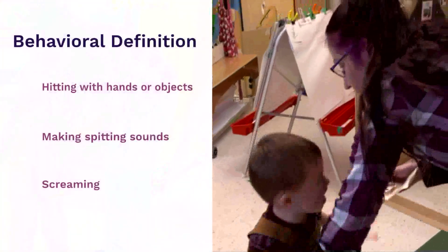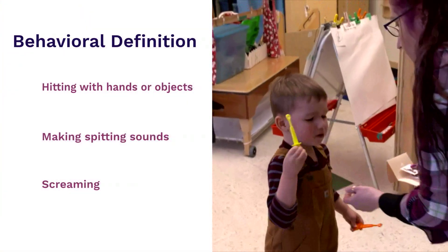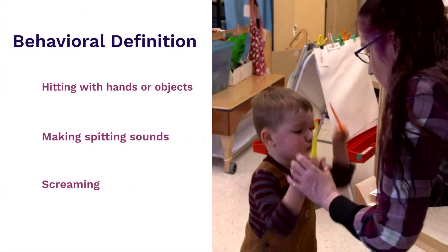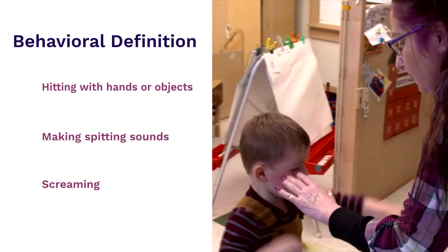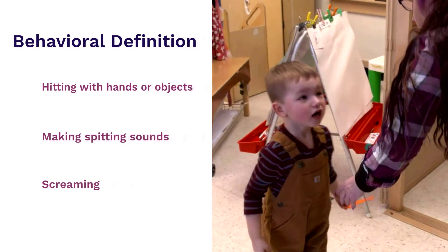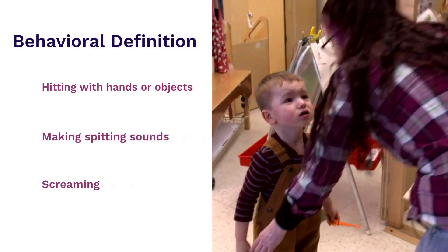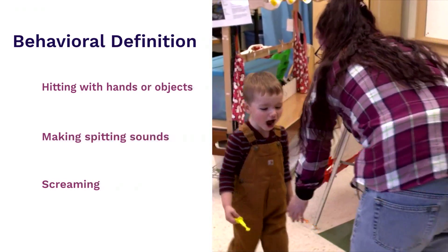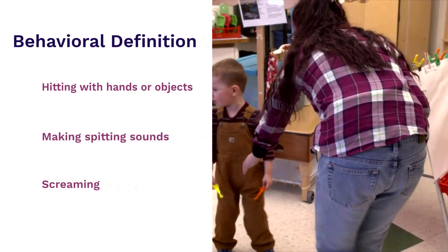In this video, the boy is having what we might call a tantrum. We would probably define it as two or more of the following behaviors: hitting with hand or objects, making spitting sounds, and screaming. Once we have clear, concise, and observable definitions of our behaviors of concern, we can decide how we want to record the behavior.